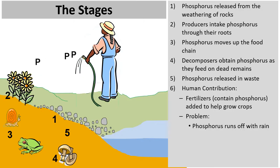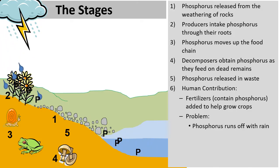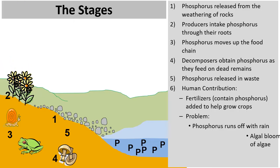If we add a person here and have them spray some phosphorus onto these plants, and it rains shortly after, the phosphorus can simply be washed away into this waterway — maybe a lake, river, or ocean. Let's call this a lake. The phosphorus builds up and builds up. Phosphorus is a great fertilizer, that's why we add it to crops, but in this case it causes problems.